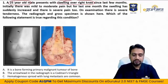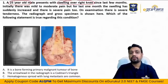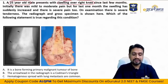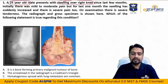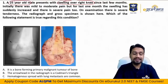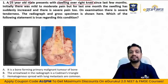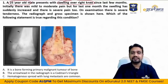Initially there was mild to moderate pain, but for the last one month the swelling has suddenly increased and there is severe pain too. Trauma is ruled out because the swelling has been there for a long time. What remains is tuberculosis and tumor. The pain was mild to moderate initially but now swelling has suddenly increased — either it's an acute flare of infection or the tumor has malignancy flaring up.